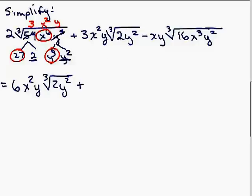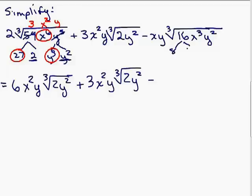Well, I can't take anything out of this 2 y squared in the middle, so that's nice. I just get to keep that. 3 x squared y, cube root of 2 y squared. What about this last one? Let's see, do I have a perfect cubed in here? Well, 8 goes into 16. So I'm just going to say that's the same as 8 times 2. And then the x cubed is already a perfect cube.